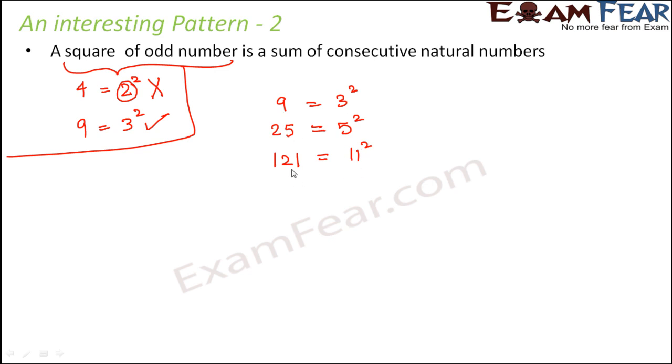This pattern says that the square of odd numbers can be written as sum of consecutive natural numbers. For example, 9 can be written as 4 plus 5. So 4 and 5 are consecutive natural numbers. Similarly, 25 can be written as 12 plus 13, and 121 can be written as 60 plus 61. So all squares of odd numbers can be written as sum of consecutive natural numbers.